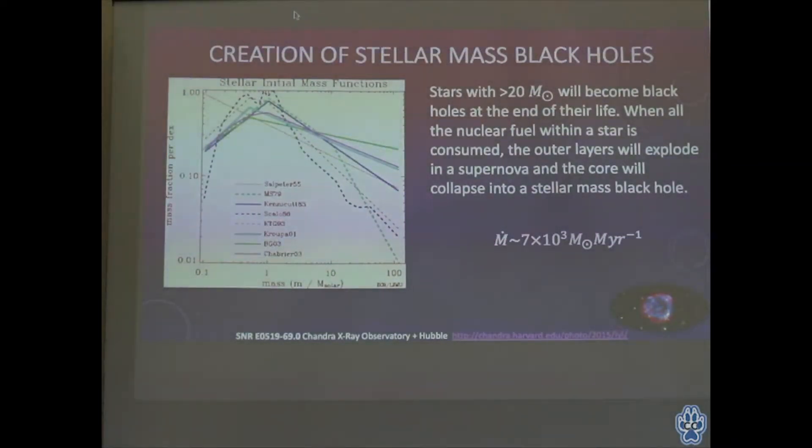First, let's look at how stellar black holes are made. When a star about 20 times the mass of our sun dies, it explodes in a giant supernova and the core collapses into a black hole. This figure on the left, if we look at the y-axis, shows the relative number of stars, and the x-axis shows how heavy they are. We're interested in those about 20 times the mass of our sun and heavier—these collapse into black holes.